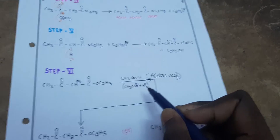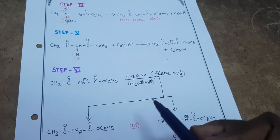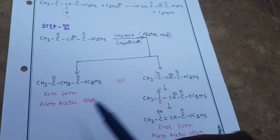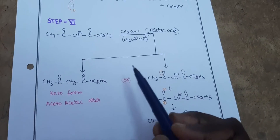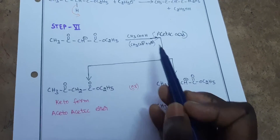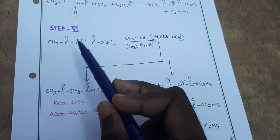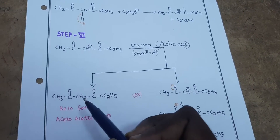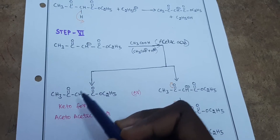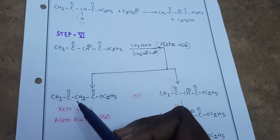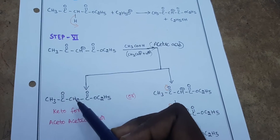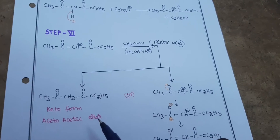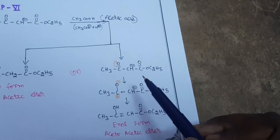There are two possibilities of forming the final product: the keto form and the enol form. For the keto form, the H+ attaches at the negative charge site (CH2-) and combines to form a bond, giving CH3-CO-CH2-COOEt — the keto form of acetoacetic ester.